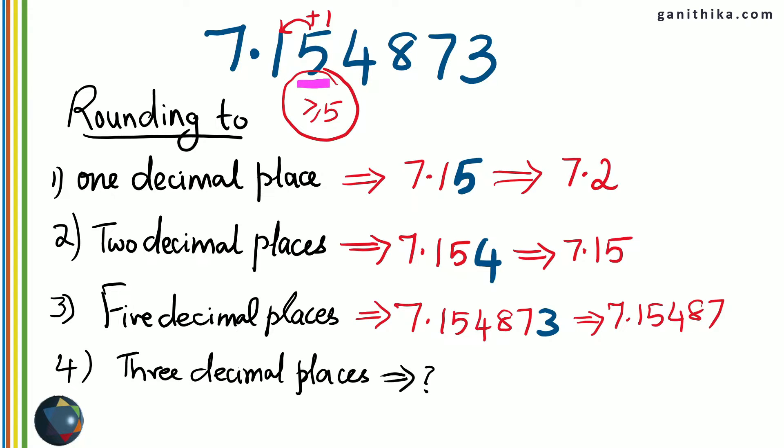Now, round off 7.154873 to three decimal places. For three decimal places, you go to the fourth decimal place. The fourth decimal place has the number 8, which is more than 5. Therefore the third decimal place number, which is 4, will be increased by one unit. So 7.155 will be the final answer for rounding this off to three decimal places.